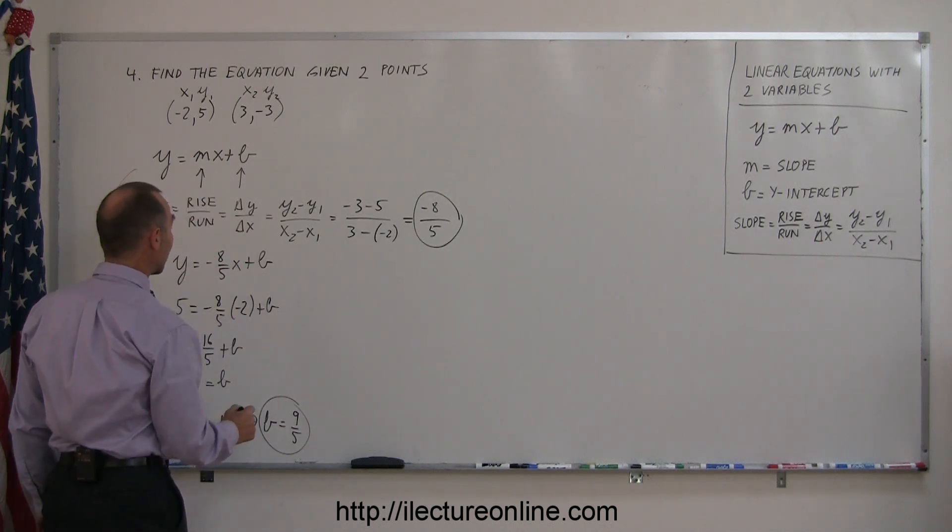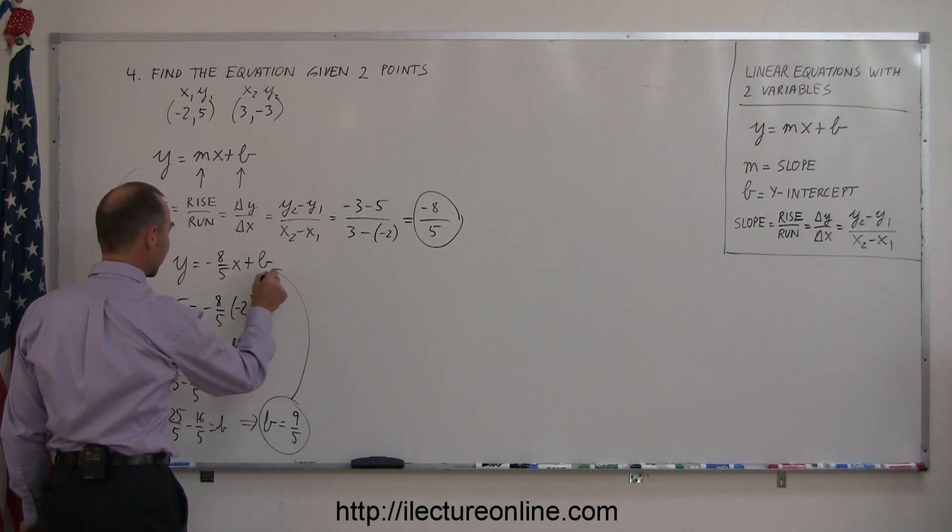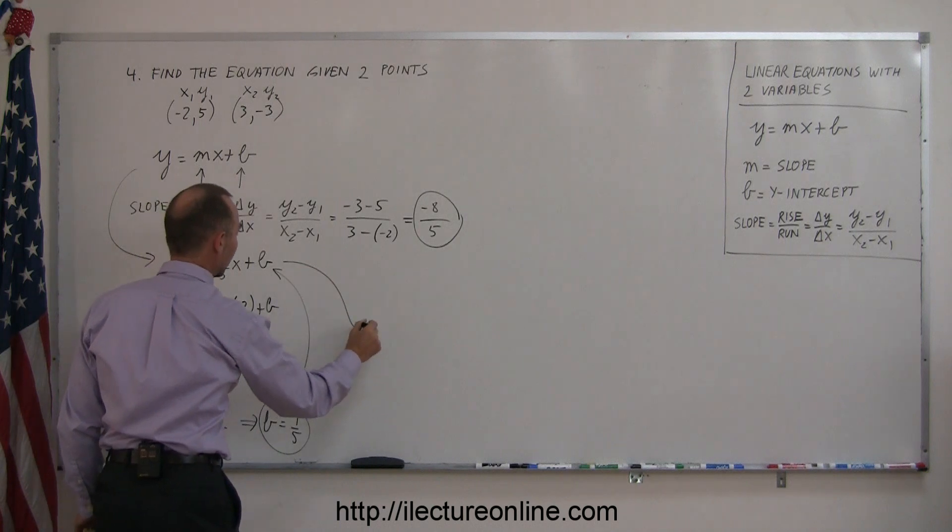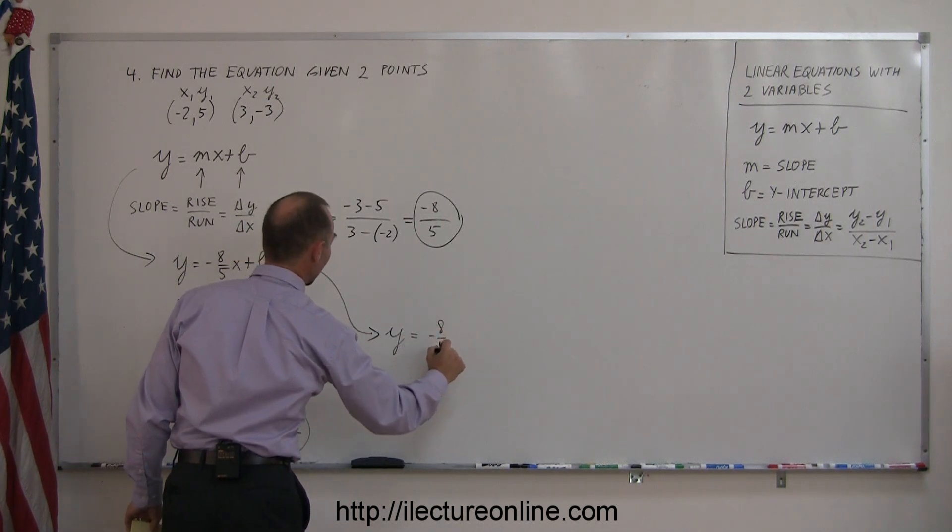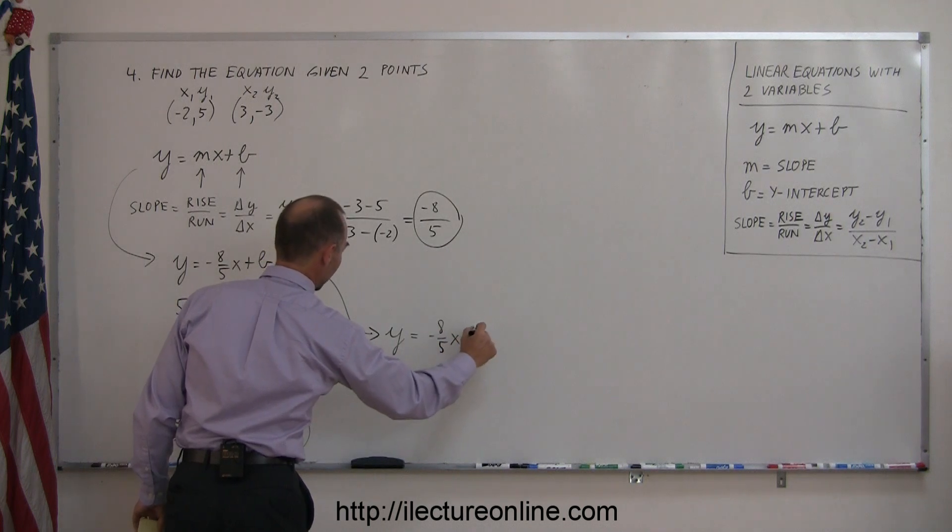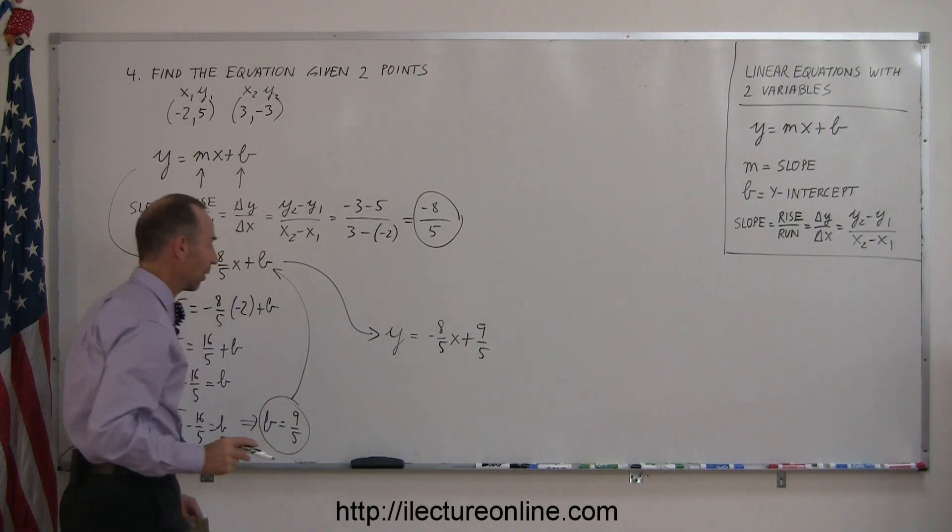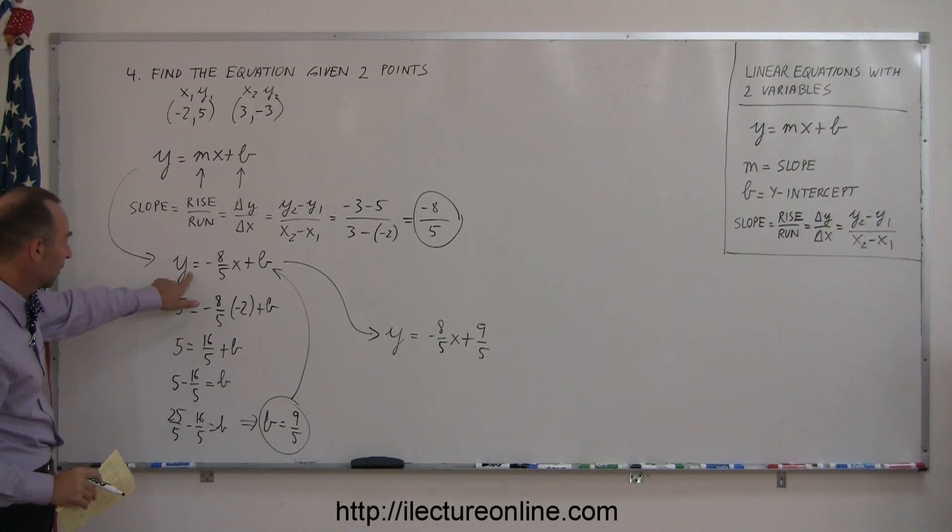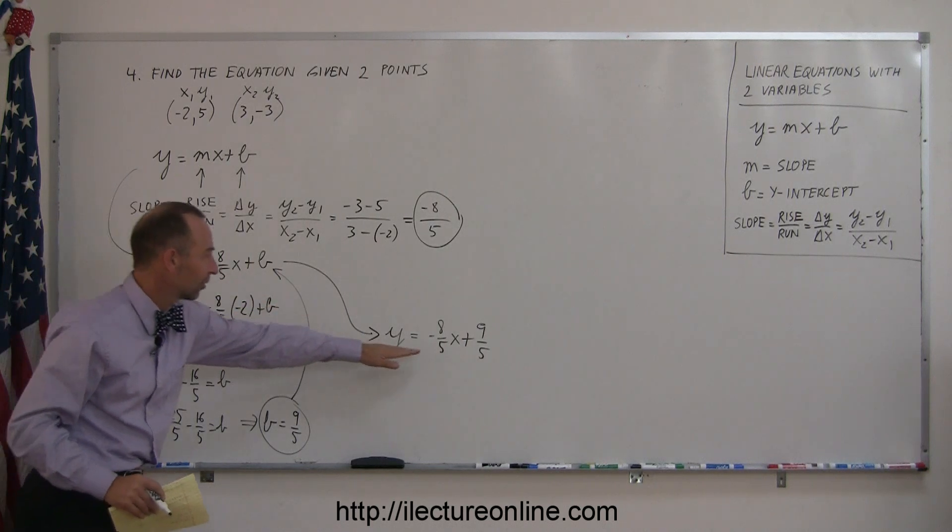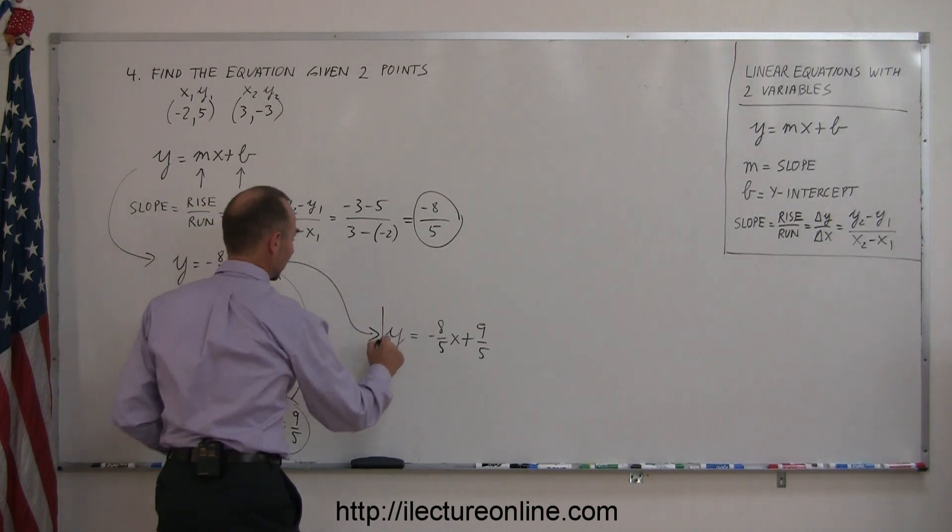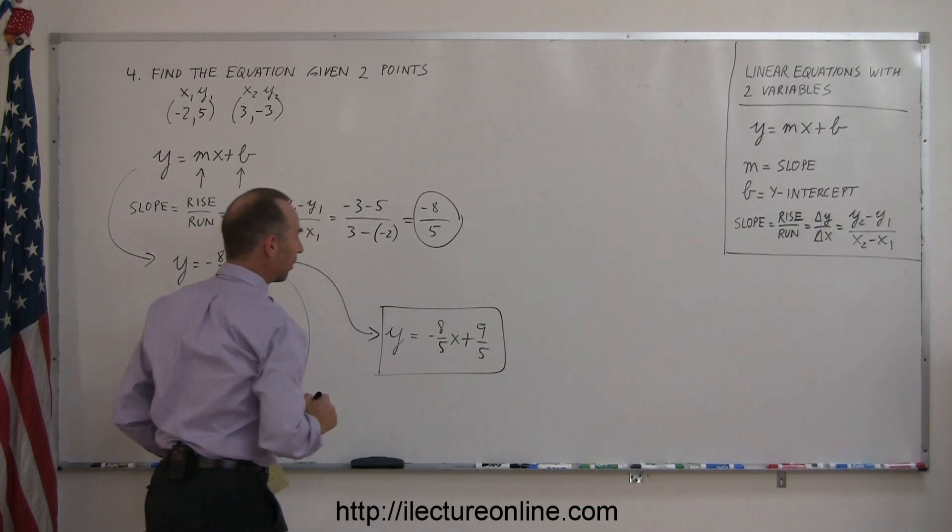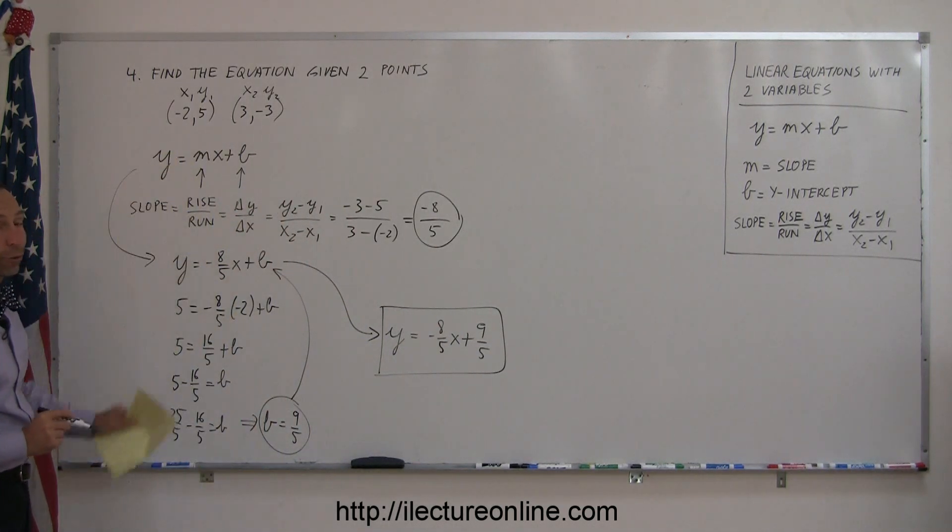I can plug that back into my equation, which means y = -8/5x + 9/5 is the equation I'm looking for. So here we have y = -8/5x, and instead of b we have 9/5. And there's the equation representing the line going through those two points.